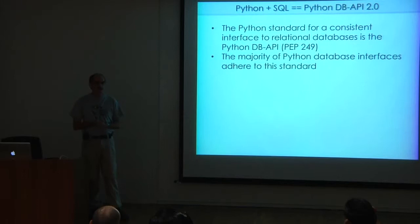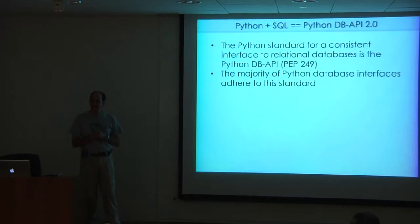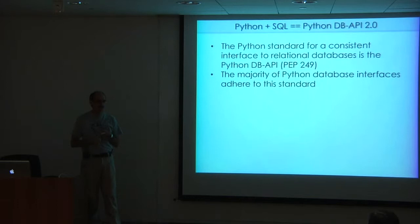Way back when I started using Python there were different ways of accessing the database — some proprietary things — and then what came on the scene was the DB-API. There was version one and pretty fast after that version two, modeled on Perl's DB API so you could write code that was almost cross-database. It's all based on PEP 249, which is really worthwhile reading. The majority of database adapters now implement this API compliant to version two.